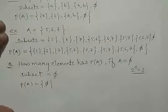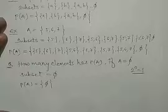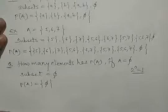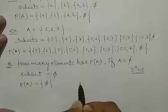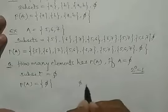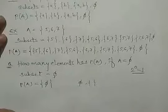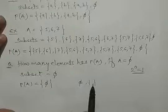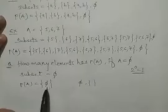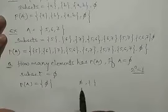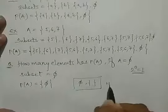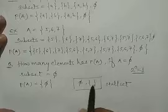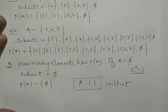जब आपको null set — यह empty set के बारे में पढ़ाया था, तो null set को ∅ से, और empty set को { } से बताओगे. आप इन दोनों को एक साथ नहीं लिख सकते — आप इस bracket के अंदर इस ∅ को नहीं लिख सकते, क्योंकि आप bracket के अंदर ∅ को लिख दोगे तो वो power set बन जाएगा. इसलिए अगर null set / empty set को represent करना है, तो आपको सिर्फ ∅ लिखना पड़ेगा या empty set { } लिखना पड़ेगा — आप इन दोनों को मिला के नहीं लिख सकते.